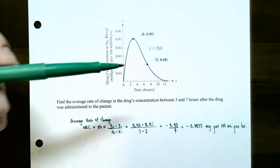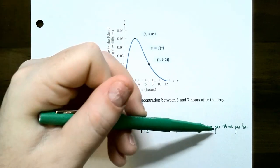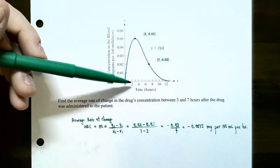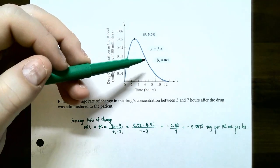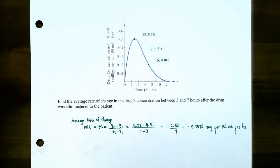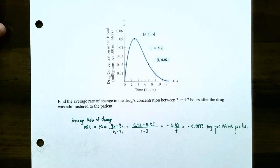Keeping track of units: the numerator is in milligrams per 100 milliliters, and the denominator is in hours, so the units are milligrams per 100 milliliters per hour. Between 3 and 7 hours, the drug concentration fell on average 0.0075 milligrams per 100 milliliters each hour. This finishes our discussion on average rate of change and the slope of the secant line. If you have any questions, please let me know, and I'll see you in the next video when we talk about domain and composition of functions.